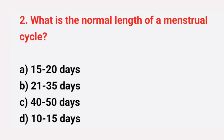Question number 2: What is the normal length of a menstrual cycle? The right answer is option B, 21 up to 35 days.